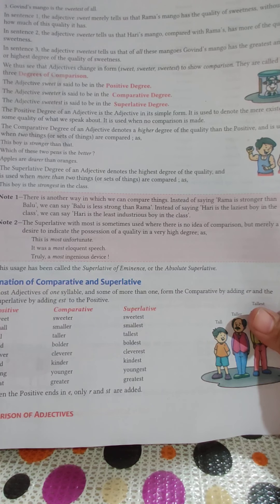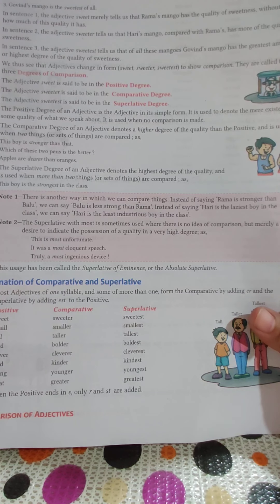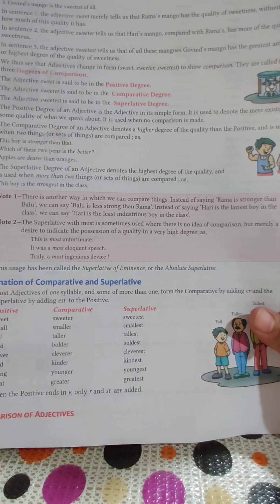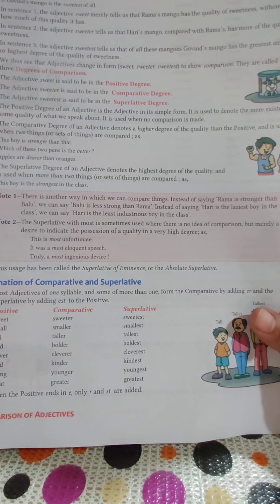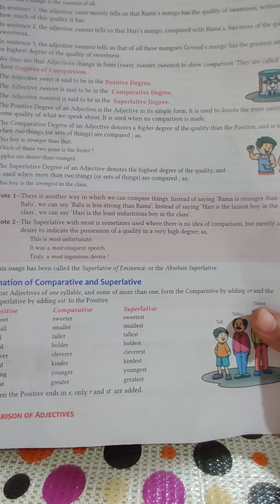The first sentence simply tells us that Rama's mango has the quality of sweetness, without saying how much of this quality there is. The second sentence uses the adjective 'sweeter,' which tells us that Hari's mango, compared with Rama's, has more of the quality of sweetness.